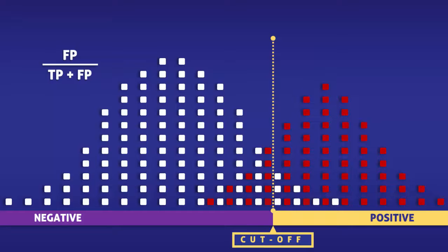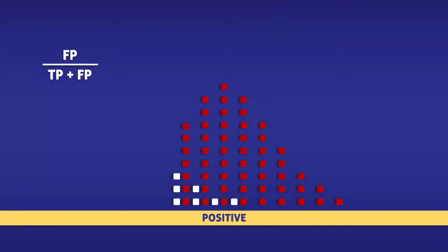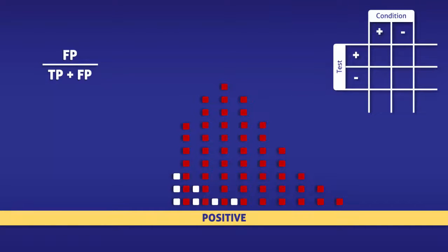Since the false discovery rate only takes into consideration people who test positive, we are going to focus on the squares to the right of the yellow line. When trying to determine the false discovery rate, we only need to use the top row of the sample table.